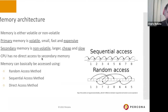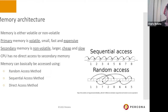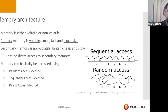When we talk about memory access methods, we have random access, sequential access, and direct access. Direct access is used with tape drives and isn't relevant here. Sequential access is usually much faster than random access for many reasons.